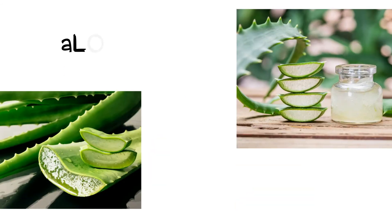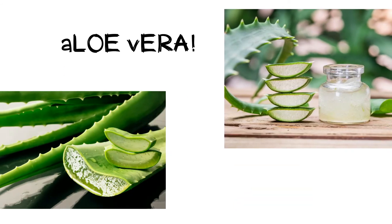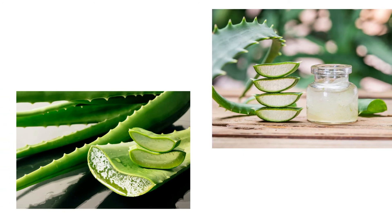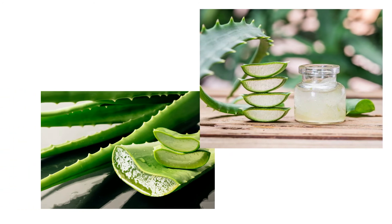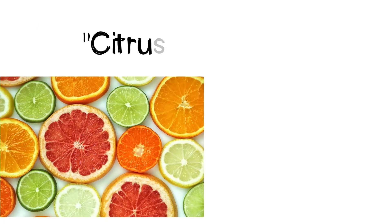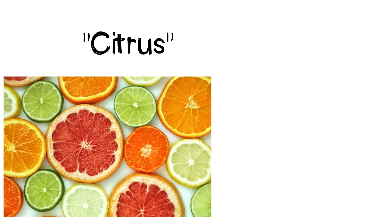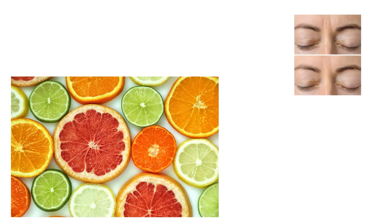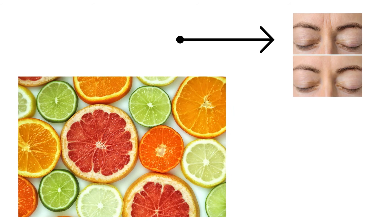Studies show that aloe gel intake from aloe vera supplements considerably reduces wrinkles and improves elasticity. It stimulates collagen production and can help improve the overall texture and appearance of skin. Citrus juices contain vitamin C, which is a powerful antioxidant. Citrus-based juices can slow down the skin aging process.